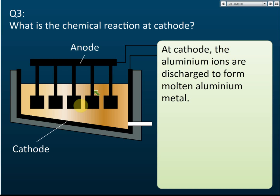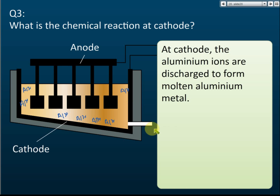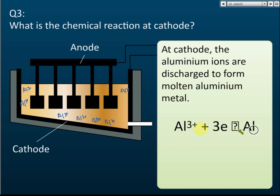At the cathode, Aluminium ions are discharged to form molten Aluminium metal. The cathode is negative, so the positive Aluminium ions move toward it. The Aluminium ions receive electrons and are discharged to form Aluminium atoms.